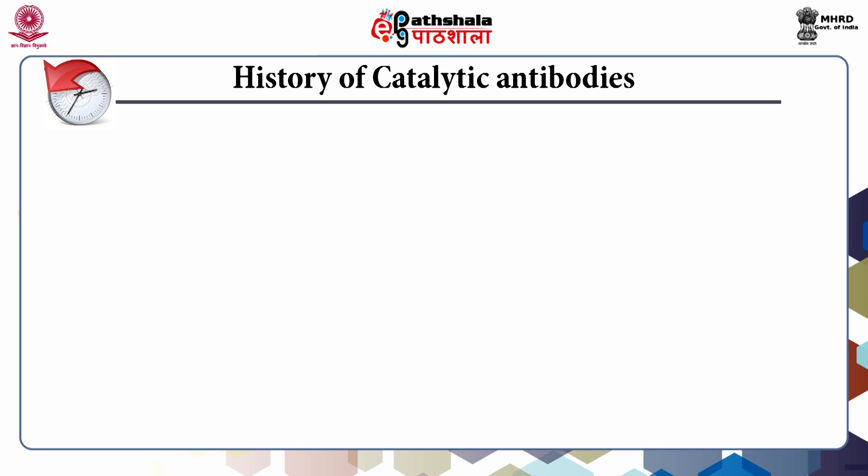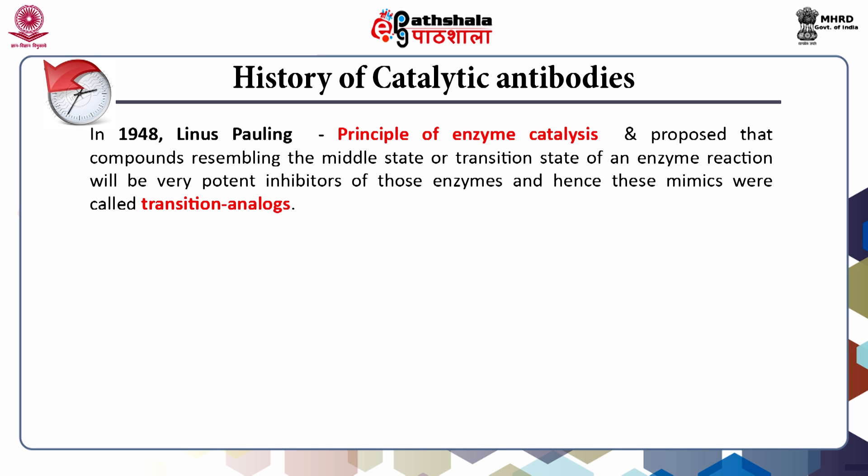A look into the history of catalytic antibodies takes us back to 1948, where Linus Pauling gave the principle of enzyme catalysis and proposed that compounds resembling the middle state or transition state of an enzyme reaction would be very potent inhibitors of those enzymes. These mimics are termed transition state analogues.